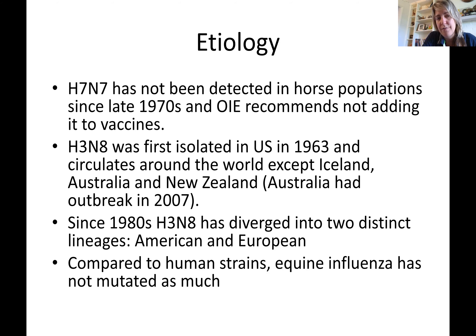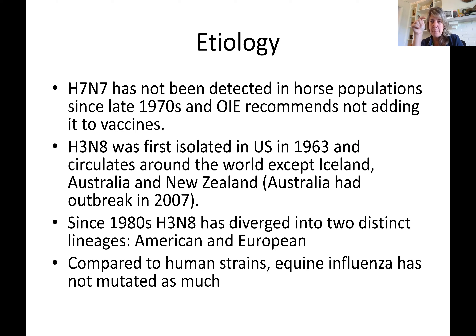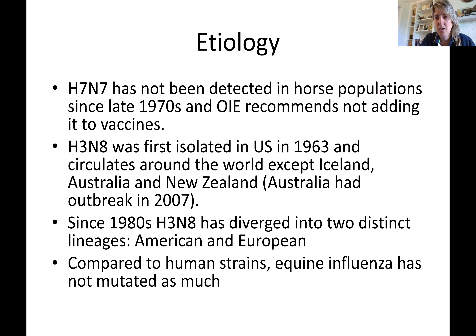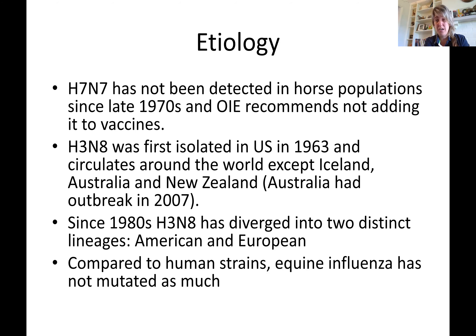H3N8 was first isolated in the US in 1963 and circulates around the world except in a few countries — Iceland, Australia, and New Zealand are influenza-negative. In Australia, there was an influenza outbreak in 2007 where a stud horse from Japan arrived febrile, was missed at quarantine, and was placed at the Olympic facility in Sydney. From there the disease spread to the entire country.